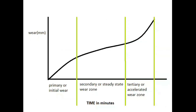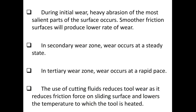This chart shows the relation between wear and time. Three zones are shown: the primary or initial wear zone, the secondary or steady-state wear zone, and the tertiary or accelerated wear zone. During initial wear, heavy abrasion of the most salient parts of the surface occurs, and smoother friction surfaces produce a lower rate of wear. In the secondary wear zone, wear occurs at a steady state. In the tertiary wear zone, wear occurs at a rapid pace. The use of cutting fluids reduces tool wear as it reduces friction force on the sliding surface and lowers the temperature to which the tool is heated.